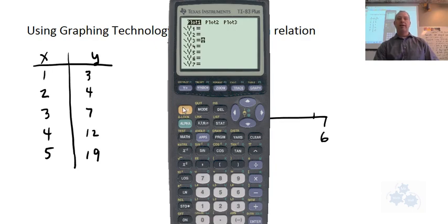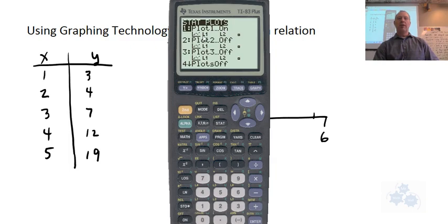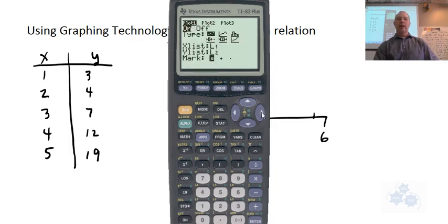Remember back here, second function y equals. This plot needs to be on, and it'll show you, see, this type of graph. List 1 is x, list 2 is y, and this is the marker. So this one should be on. If it's not on, hit enter. And maybe yours is off. Maybe yours looks like this. You've got to go over and highlight on. Turn it on.